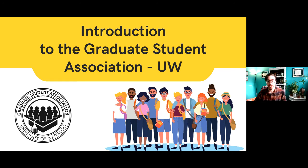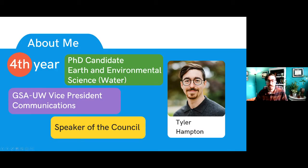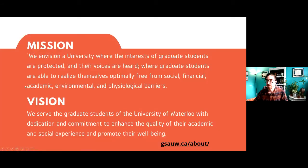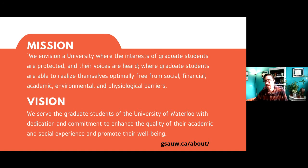A bit about me: I'm a fourth-year PhD candidate in Earth and Environmental Sciences, both Vice President of Communications for the GSA and Speaker of the Council — I'll talk about the council and the role that graduate community and representation plays. The Graduate Student Association envisions a university where the interests of graduate students are protected, their voices are heard, and where graduate students are able to realize themselves free from social, financial, academic, environmental, and physiological barriers. We serve graduate students with dedication and commitment to enhance the quality of their academic and social experience and promote their well-being.